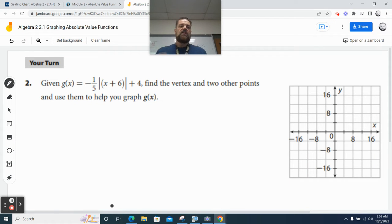Given g(x) is equal to negative one-fifth times the absolute value of x plus six plus four, find the vertex and two other points and use them to help you graph g(x).